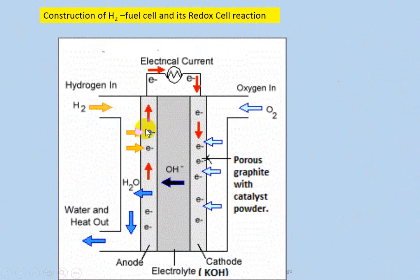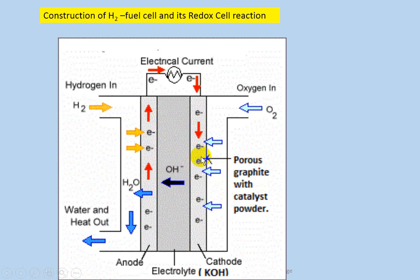Each electrode contains porous graphite with catalyst powder. Both the anode and cathode contain porous graphite with a catalyst powder — they act as the anode and cathode respectively.